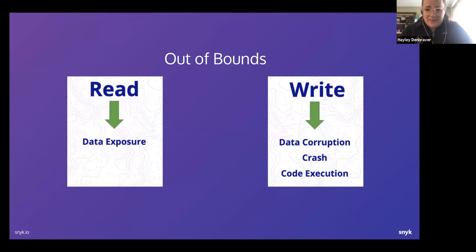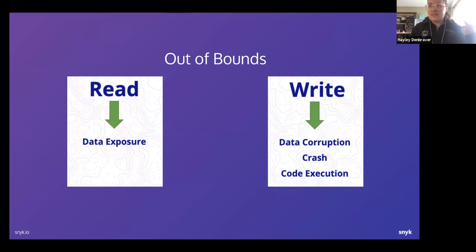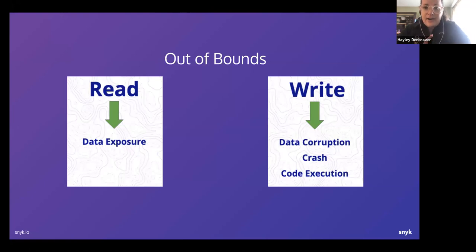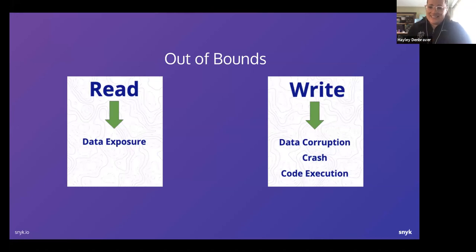To briefly overview the vulnerability types: an out-of-bounds vulnerability can take two forms. First is an out-of-bounds read, where the risk is that your data is exposed — someone is able to see something they shouldn't be able to see. The second type is an out-of-bounds write vulnerability, which can be potentially more hazardous — you can corrupt data, crash the system, or potentially execute code. Together these two types account for more than a third of the vulnerabilities we found.